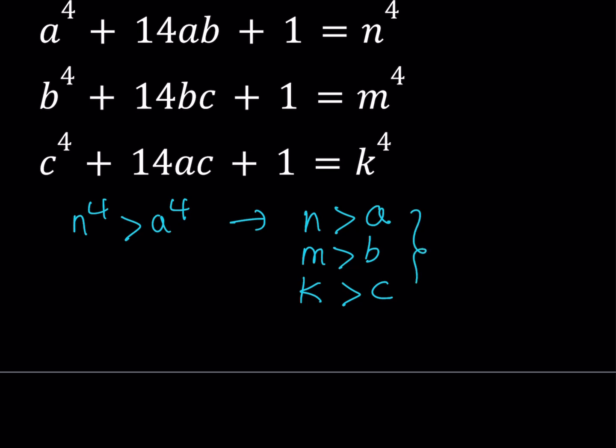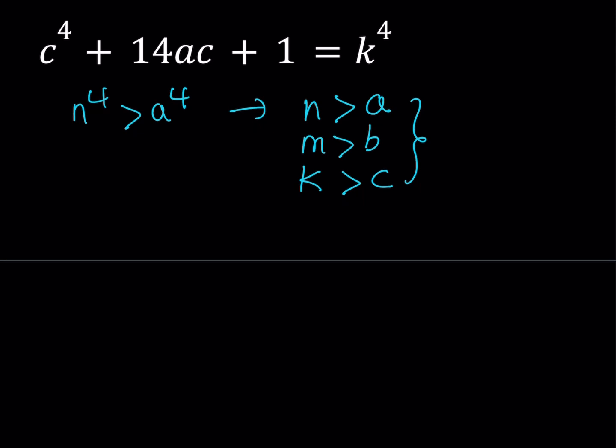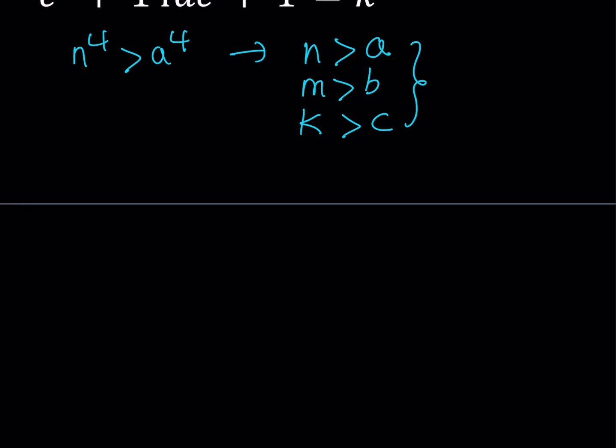Great. Now we want to turn these into something more workable. So since n is greater than a, and n and a are both positive integers, we can say that the smallest value for n would be a plus one. So n needs to be a plus one or larger. So I can write these inequalities in a less strict way, such as n is greater than or equal to a plus one, m is greater or equal to b plus one, and k is greater than or equal to c plus one.